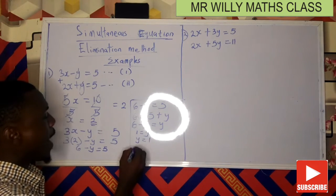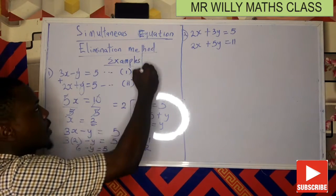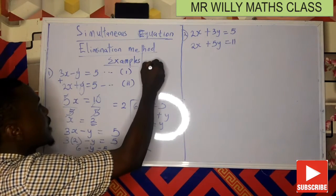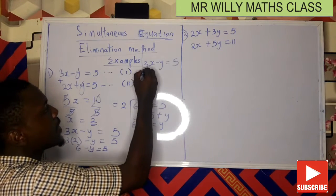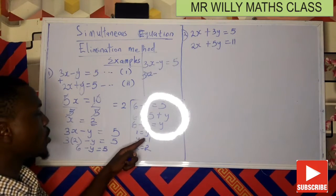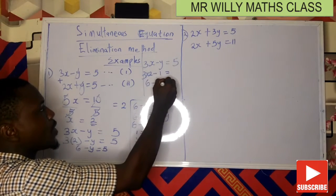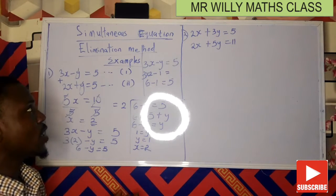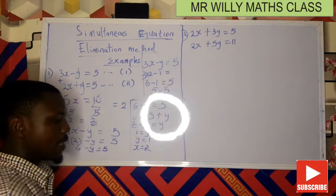So x equals 2 and y equals 1. Let's check using equation one: 3x minus y equals 5. Substituting: 3 times 2 minus 1 equals 6 minus 1 equals 5. We get 5 equals 5, which confirms we are correct.